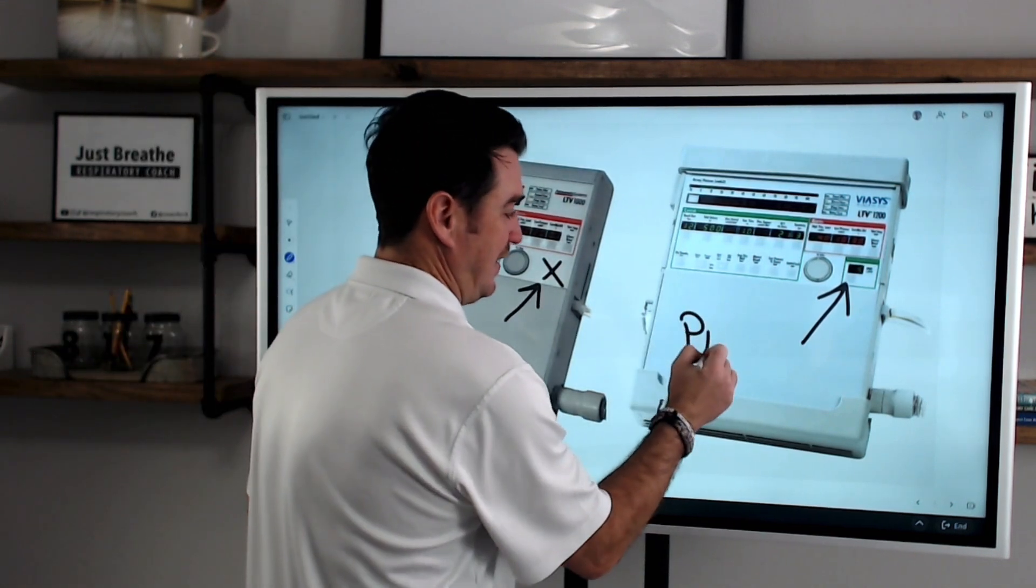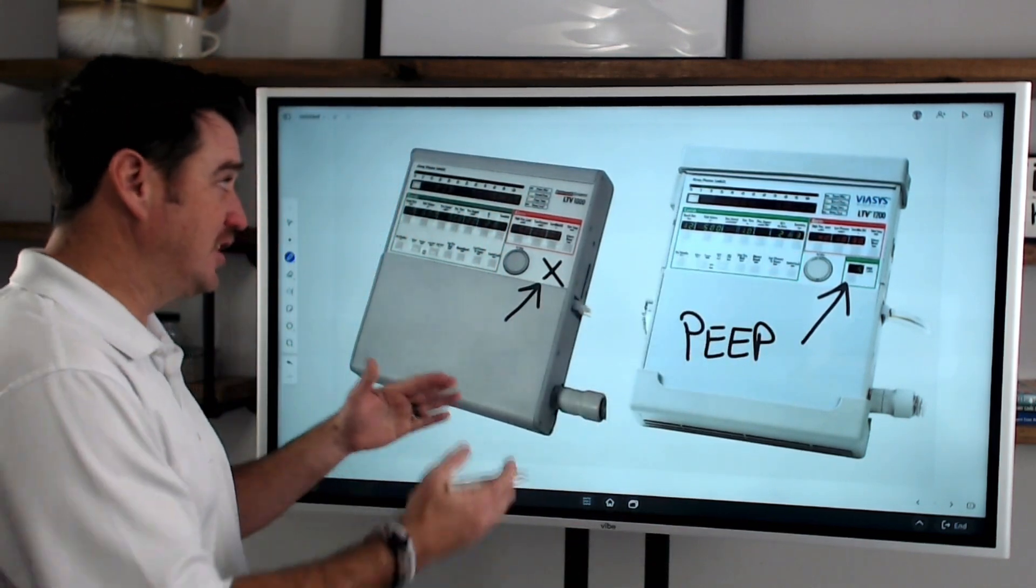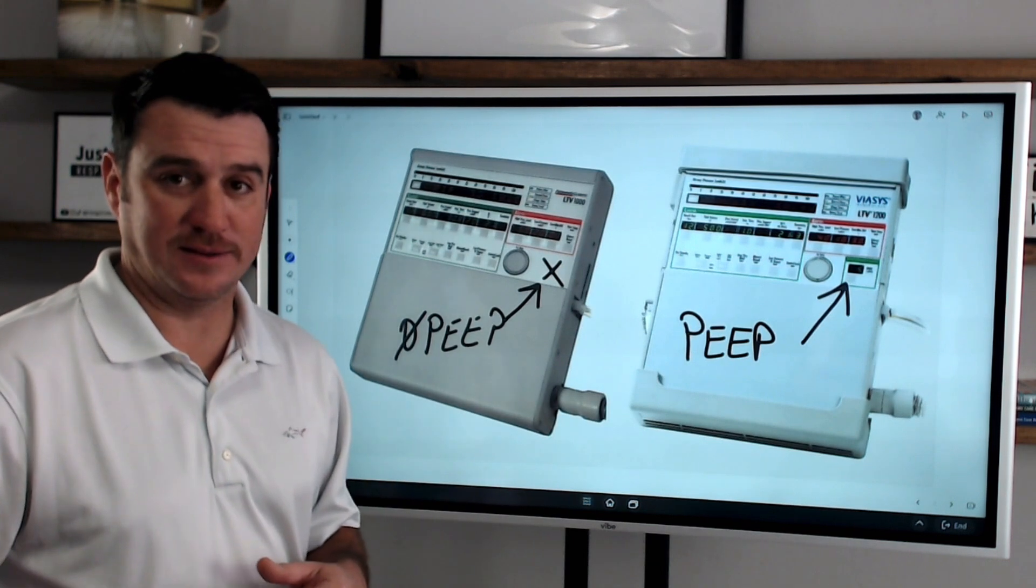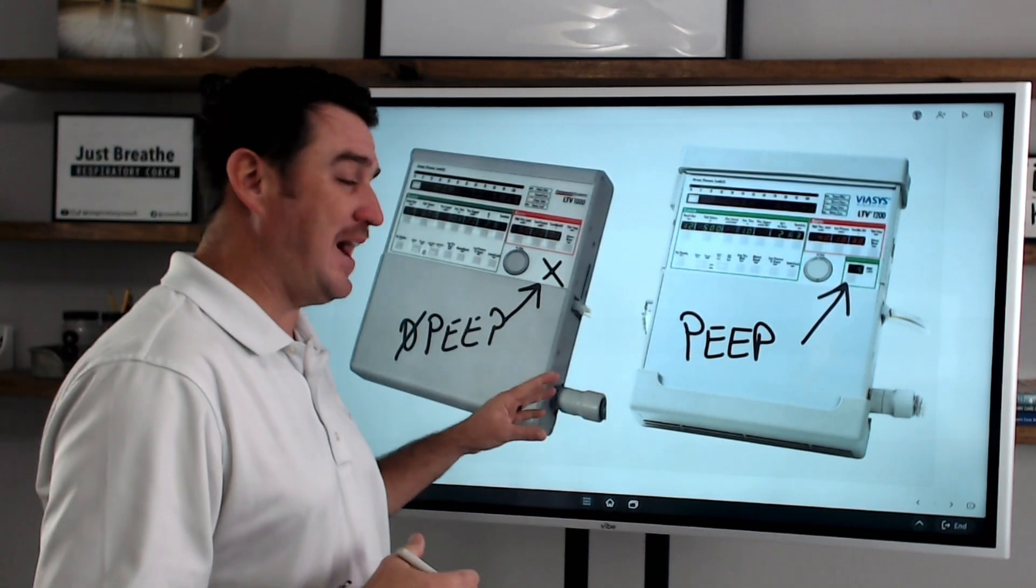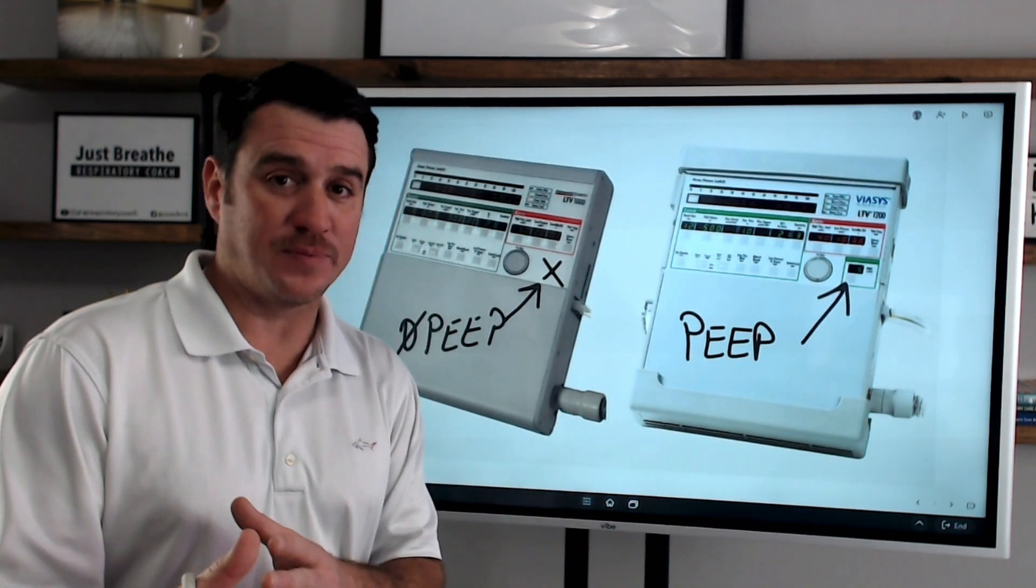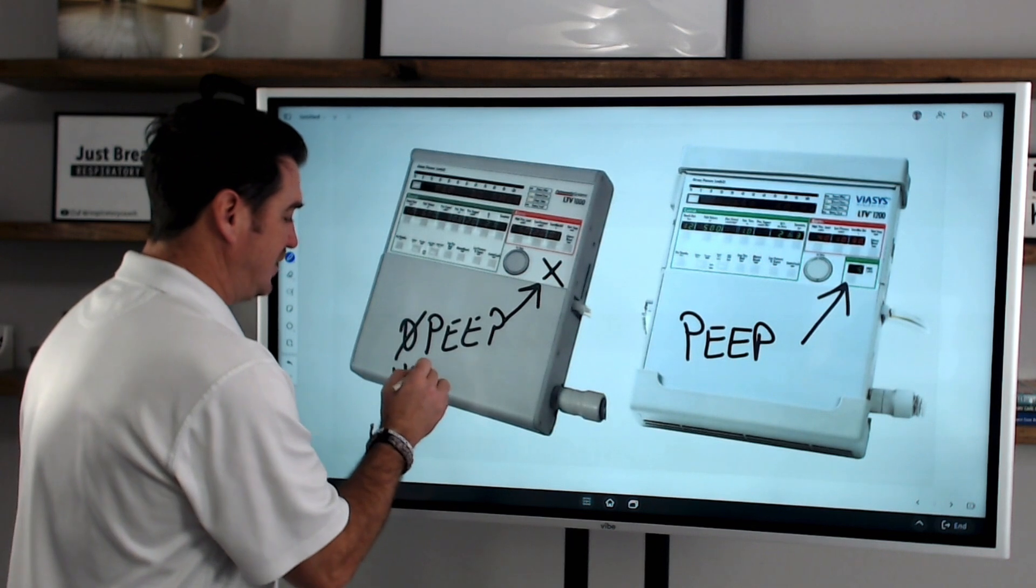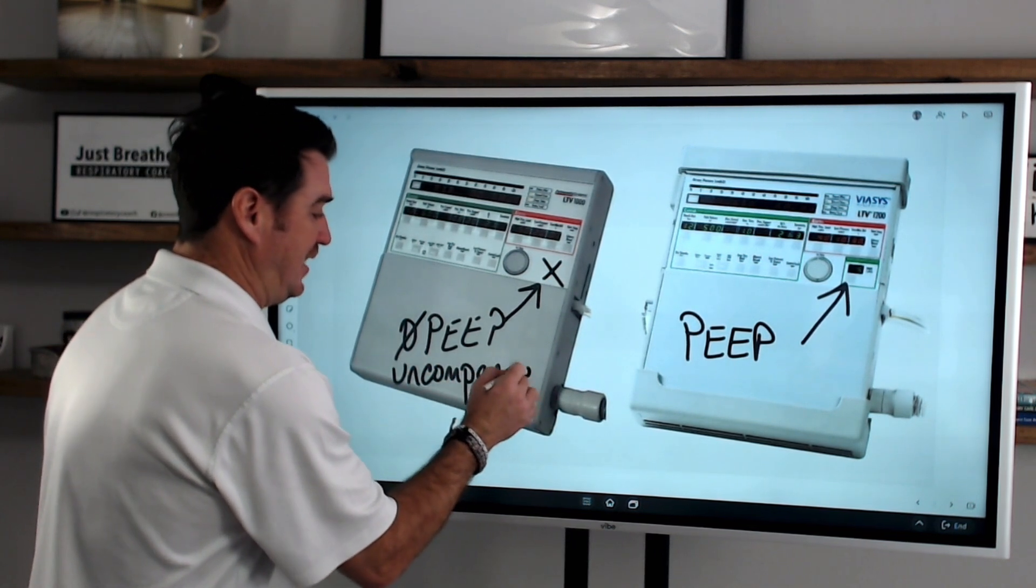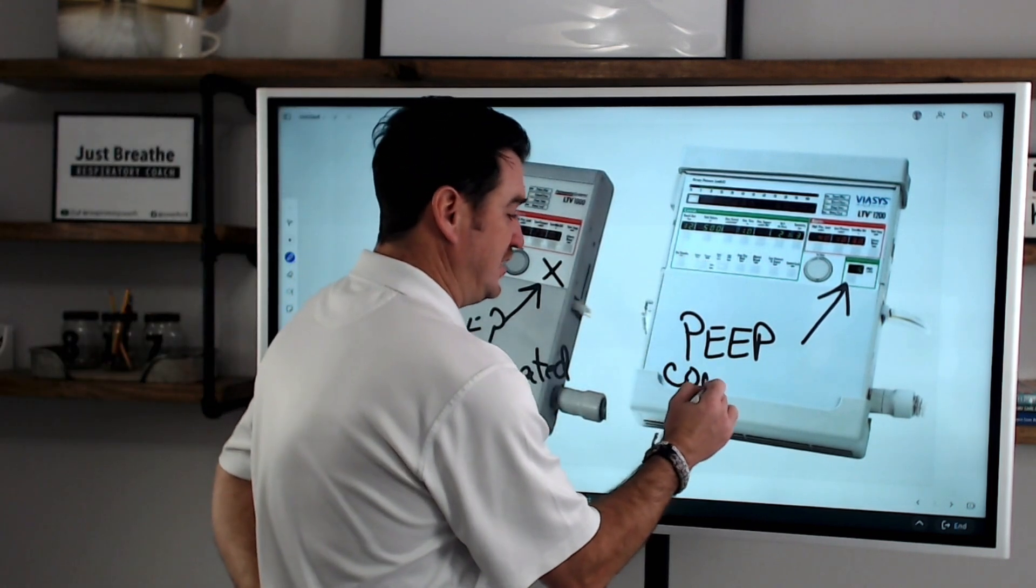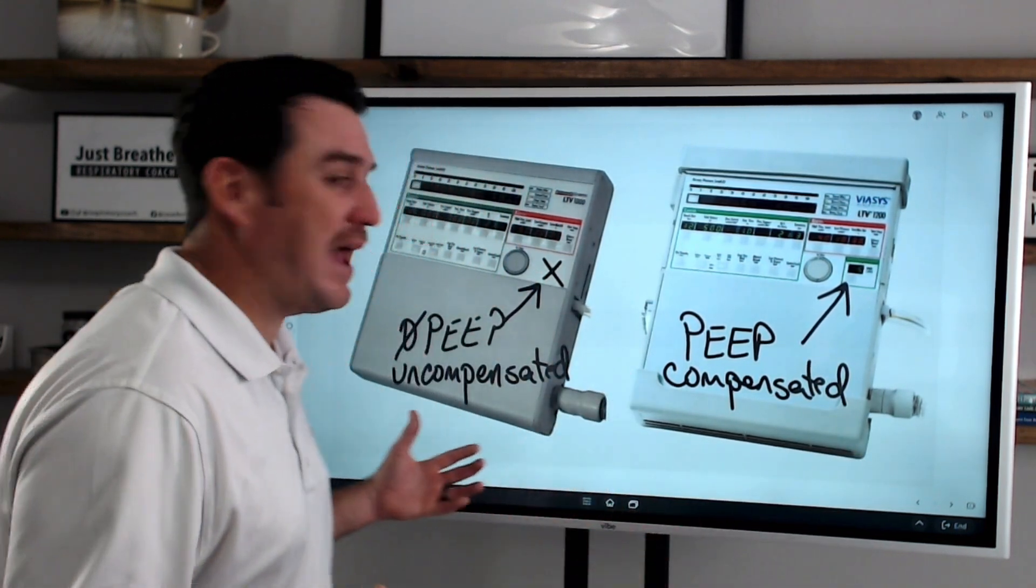This box is a PEEP setting. This is new for the LTV-1200. Now, when you look at the LTV-1000, there was no PEEP setting. Why not? Well, because the PEEP was applied externally onto the expiratory valve of the circuit. This is important because when you work with these two ventilators, you have got to understand that the LTV-1000 is uncompensated versus the LTV-1200, which is PEEP compensated. Now, why does this even matter? Well, let's talk about it.